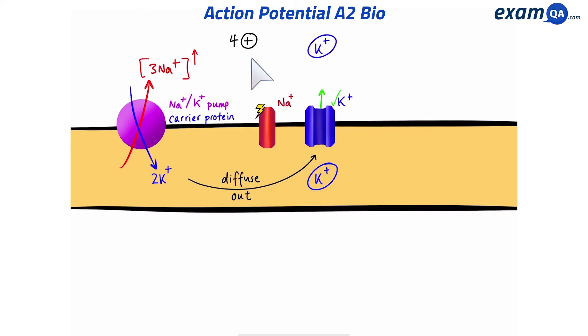So overall, we have four positive ions on the outside. Now, of course, we have way more than four, but we're saying relatively. Four positive ions on the outside, and one positive ion on the inside. That means the outside is more positive than the inside.